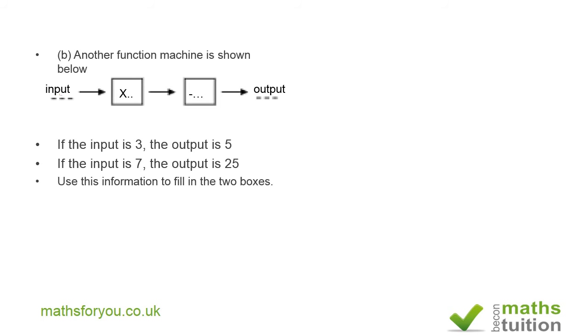Here we go. And we should try and create two equations there. So if we input 3, and then times w, and then minus z, we end up with this one here. So our output is now 3w minus z, and that's equal to 5.